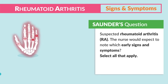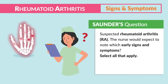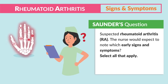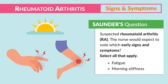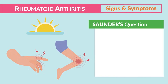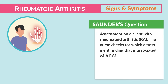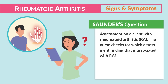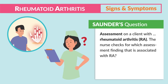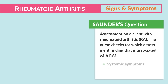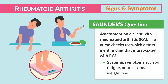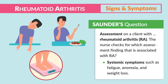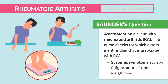Saunders NCLEX question: suspected RA — the nurse would expect to note which early signs and symptoms? Fatigue and morning stiffness. A second question: assessment finding associated with RA — systemic symptoms such as fatigue, anorexia, and weight loss. Big key terms right there.